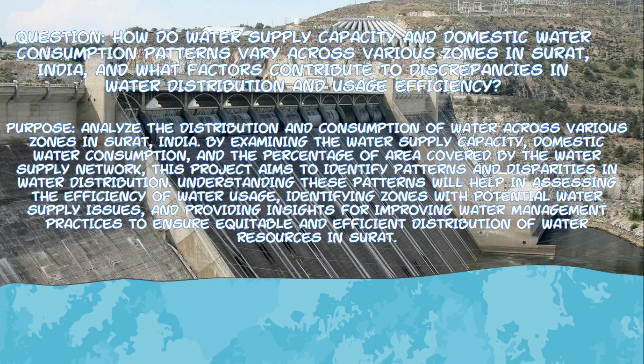The first question I want to ask is: how do water supply capacities and domestic water consumption patterns vary across various zones in Surat, India, and what factors contribute to discrepancies in water distribution and usage efficiency? The purpose is to analyze distribution and consumption across zones by examining water supply capacity, domestic water consumption, and the percentage of area covered by water supply networks, in order to identify patterns of disparity and provide insights for improving water management practices.